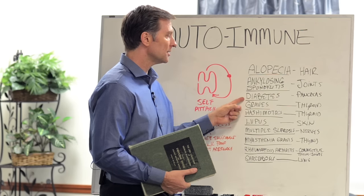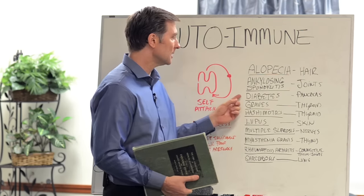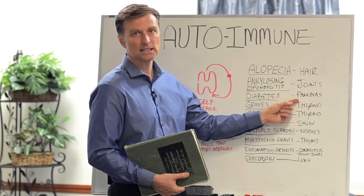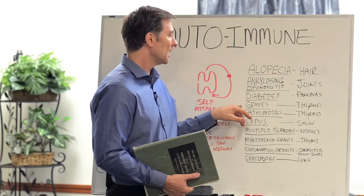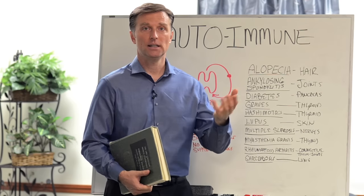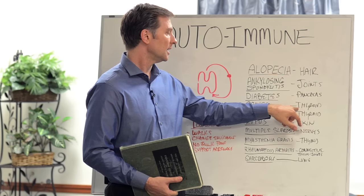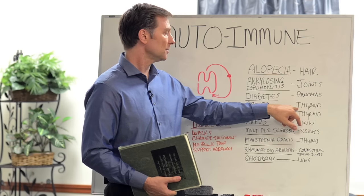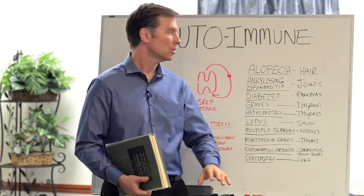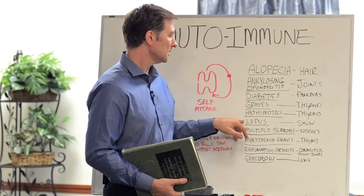Diabetes — one of the causes of a certain type of diabetes is autoimmune of the cells that make insulin, the pancreas. Graves' is a hyperthyroid — too much thyroid activity — it's a hyperthyroid autoimmune condition. And then Hashimoto's is a hypo, slow thyroid condition — both autoimmune.